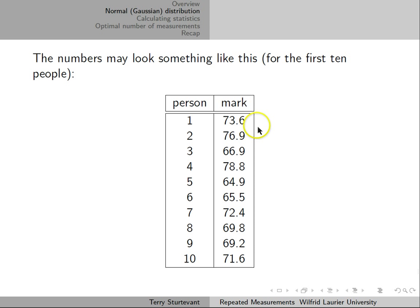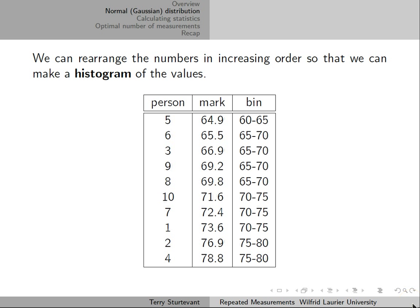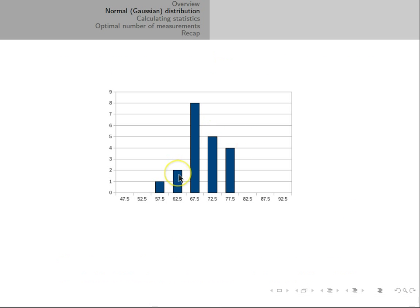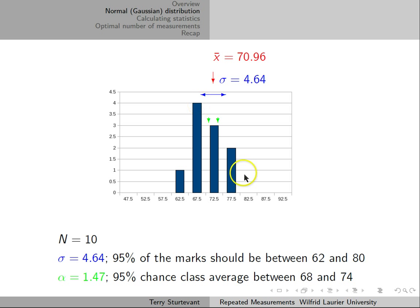Say this is the first ten marks. Yours was about 74%, so say this first one is your mark, and these are marks for nine other people. If we rearrange these marks to make a histogram, we see them from lowest to highest. There is one mark in the bin from 60 to 65, four marks in the bin from 65 to 70, three marks in the bin from 70 to 75, and two marks in the bin from 75 to 80.